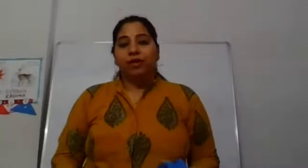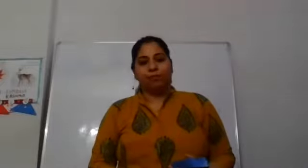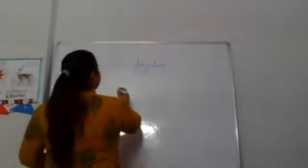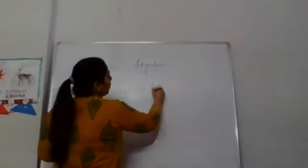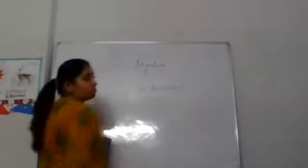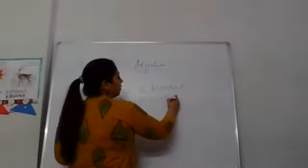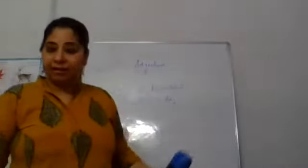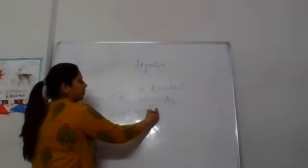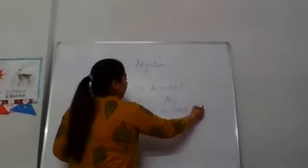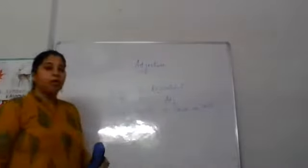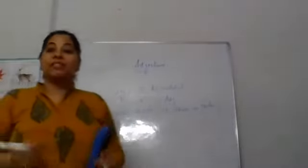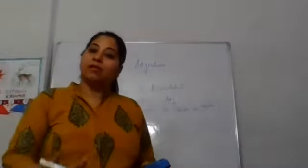An adjective is something which tells us about an additional qualification or quality of a noun or a pronoun. For example: 'She is beautiful.' Here 'she' is a pronoun and 'beautiful' is an adjective — it tells us about the quality that a particular girl has. Another example: 'This apple is sour in taste.' Here we are telling what the quality of the apple is.